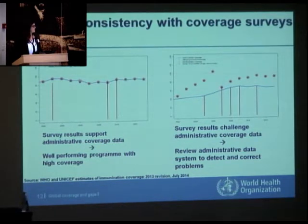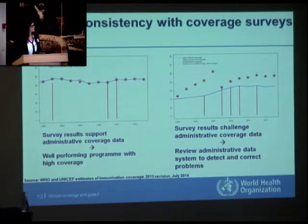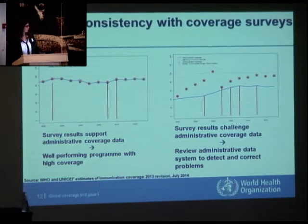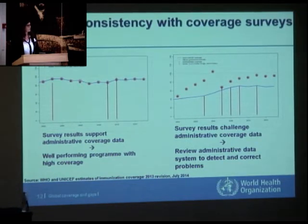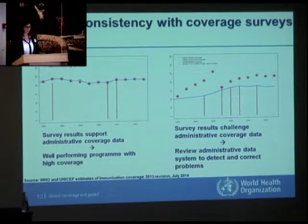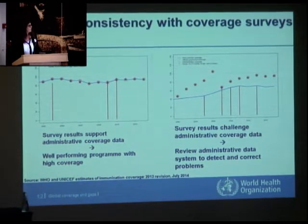On the other side, we see a program showing very different administrative coverage from survey coverage. Administrative coverage shows a big increase, then a deep decrease, then quite a big increase again. However, survey data suggests a much lower increase. In this case, one can conclude that the administrative system is probably not reliable and needs to be revisited before decisions are based on the administrative coverage data.